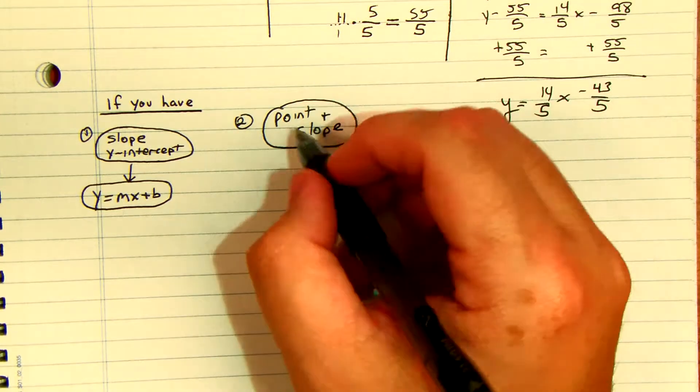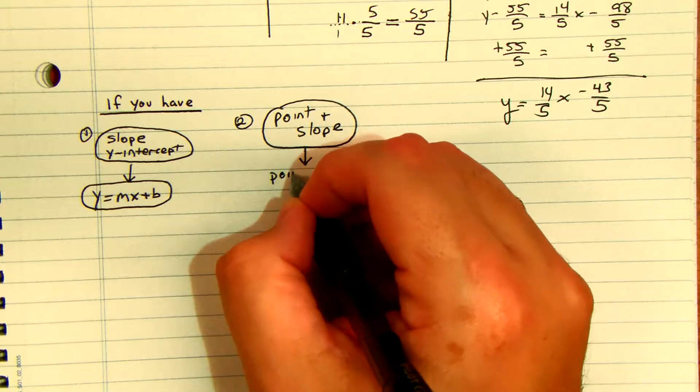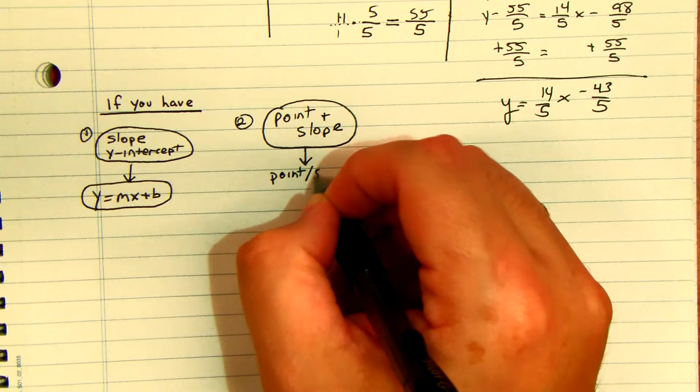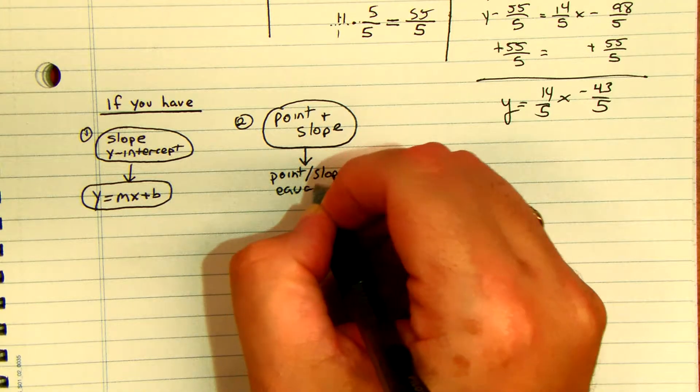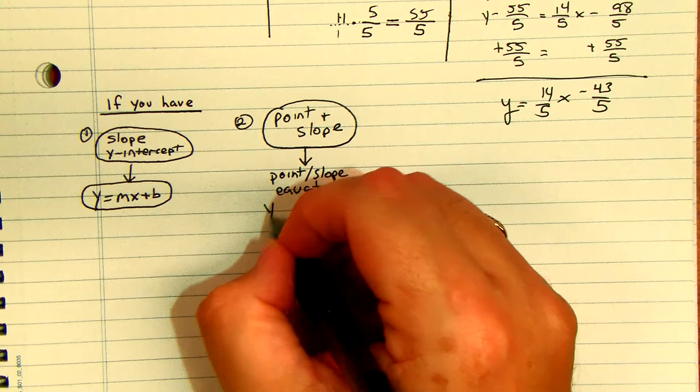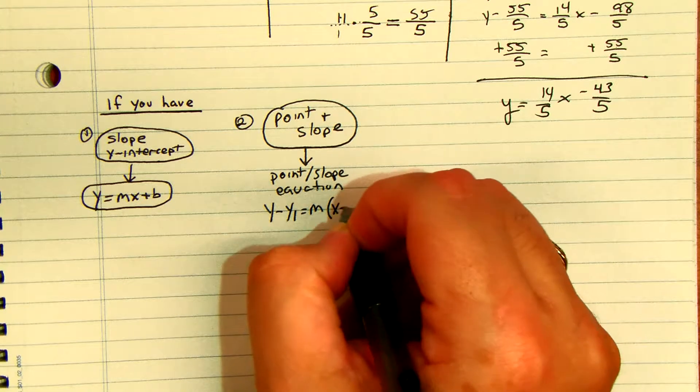If you have a point and a slope, we're going to go to the point-slope equation, which is y minus y1 is equal to m times x minus x1.